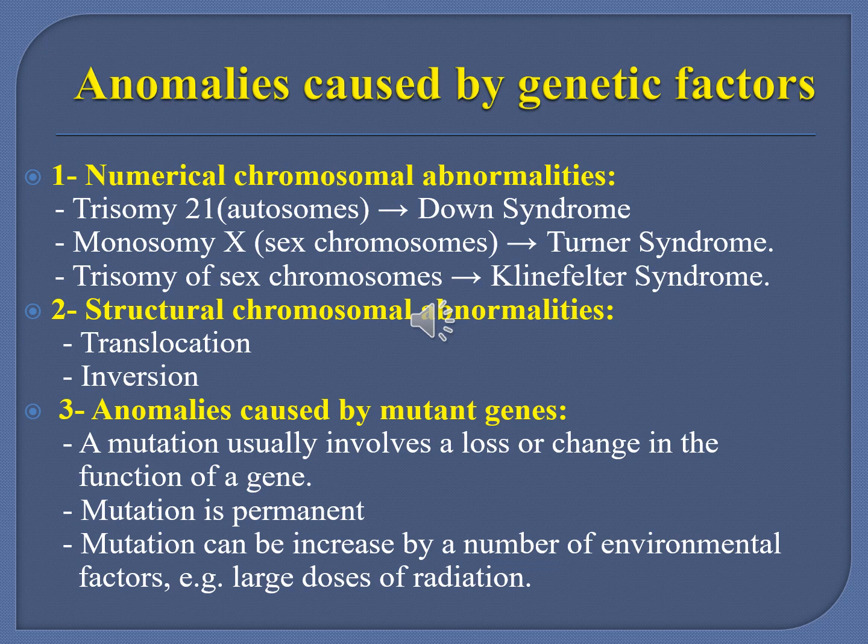Structural chromosomal anomalies include translocation and inversion, where the sequencing of DNA on the chromosome is reversed or translocated. Anomalies due to mutant genes may involve loss or change in the function of the gene. Mutations can be point mutations or silent mutations, altering the genetic coding so the particular protein becomes abnormal, leading to disease. Environmental factors like large doses of radiation and chemical exposure can increase mutation rates.